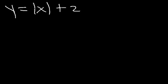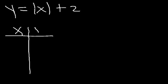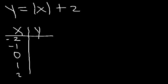So let's say if you have this function: y is equal to the absolute value of x plus 2. How would you graph it using a table first? What you want to do is find the x-coordinate of the vertex. If you set the inside equal to 0, x is going to be 0. So you want to center your table around an x value of 0. Pick two points to the right and two points to the left. If you plug in 0 into the equation, it's going to be 2. This is the coordinates of the vertex — it's (0, 2).